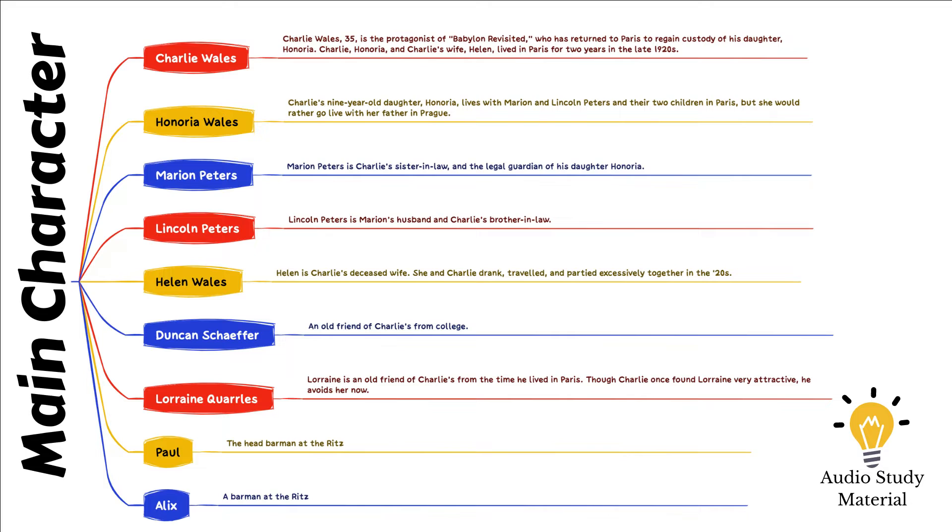Charlie has also changed. He currently works in Prague and has reduced his alcohol consumption. Charlie gives Alex the address of his brother-in-law and orders him to give it to Duncan Schaefer if he encounters him.